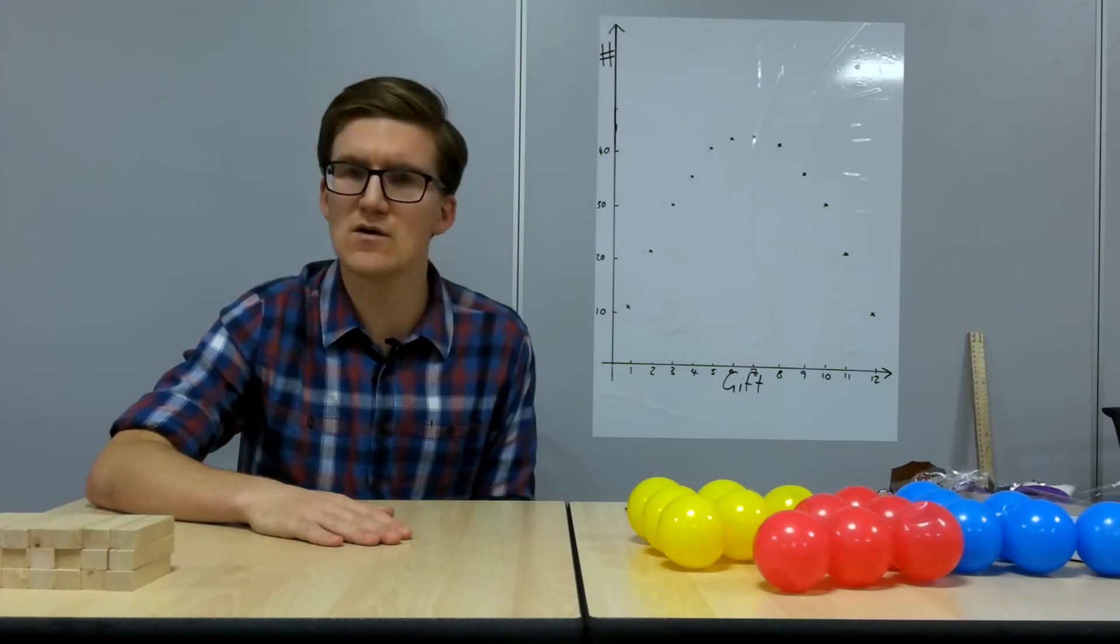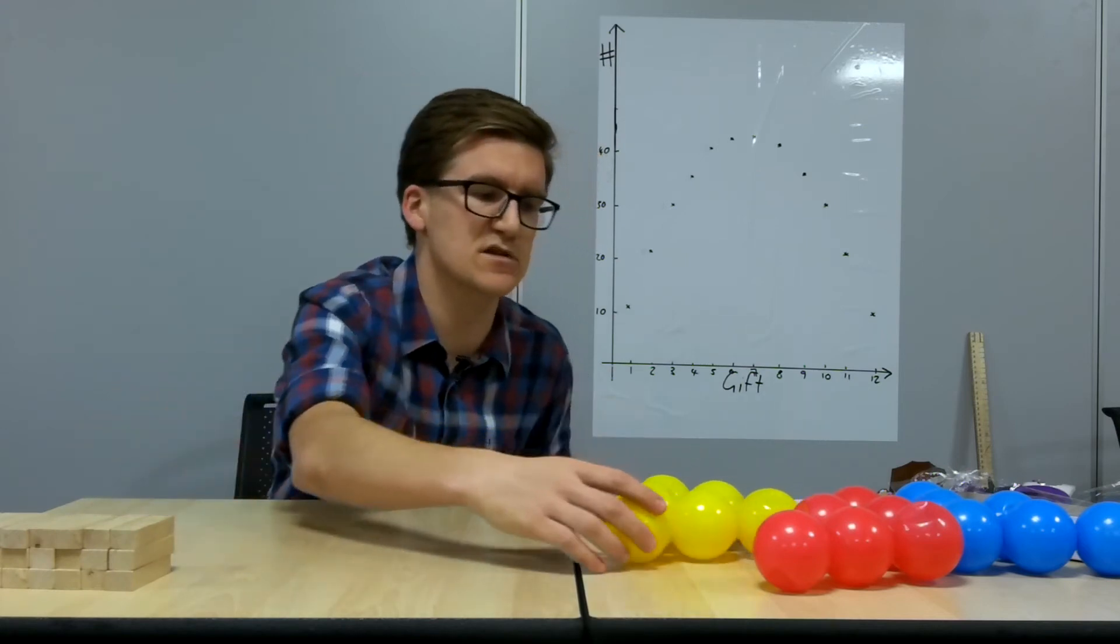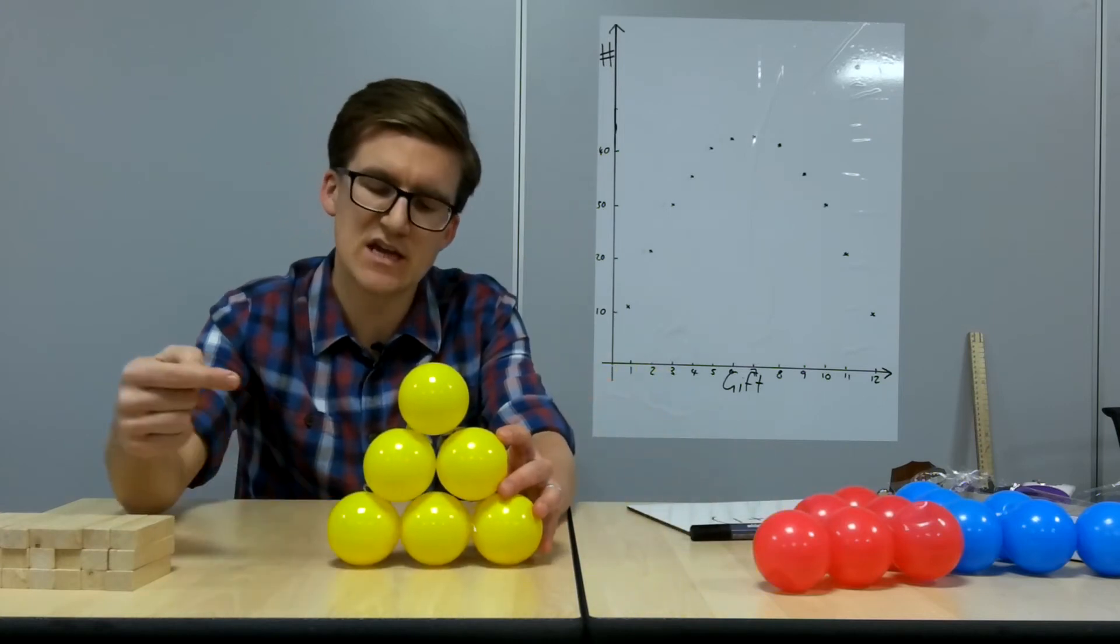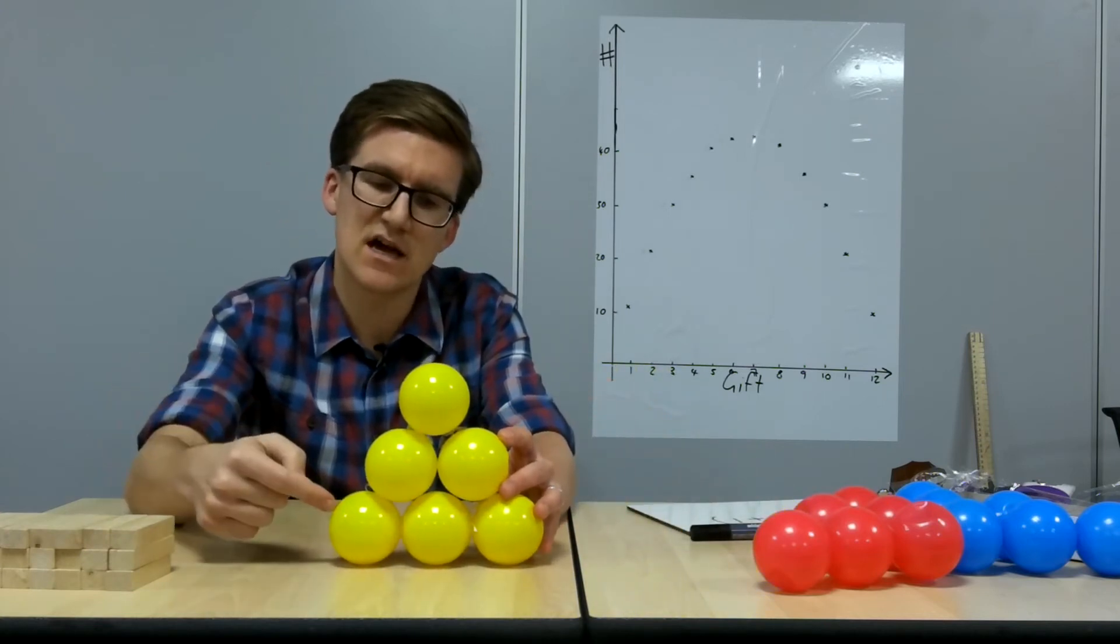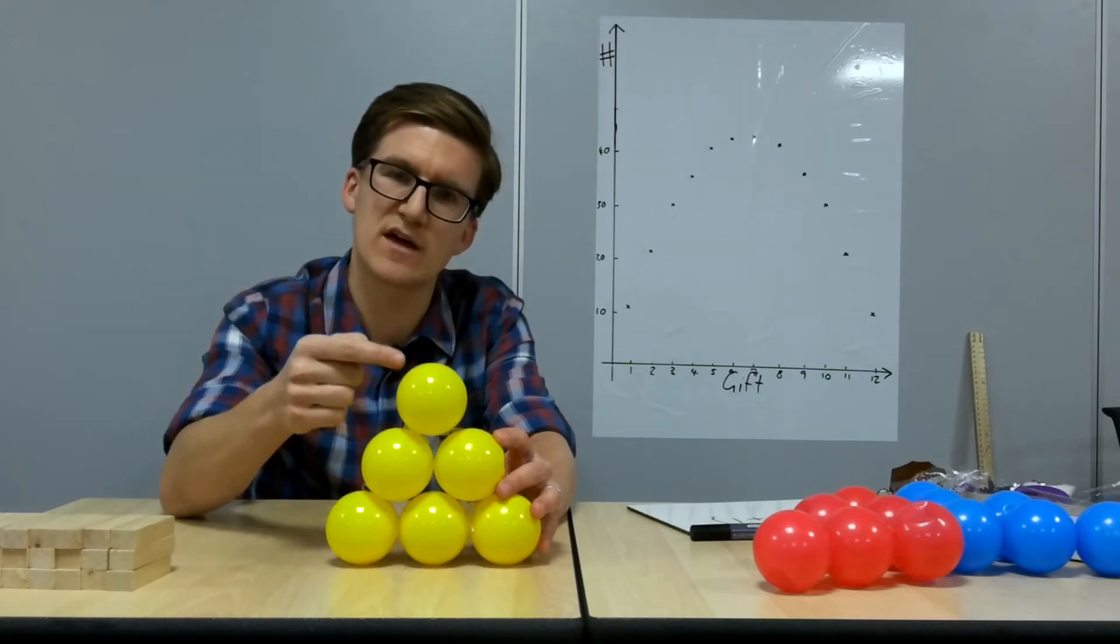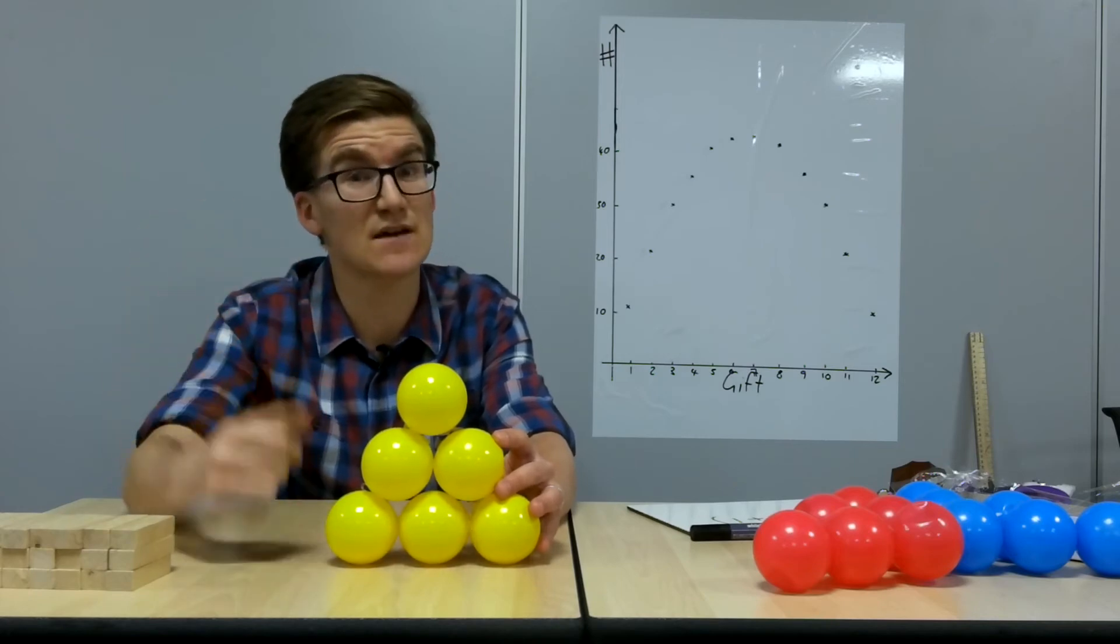Now, if we think about just any given day, let's say the third day, the third day of Christmas, what you get on the third day of Christmas is you get three gifts and then the two gifts again that you had the previous day and then you get the one gift at the end of that, the partridge in a pear tree, don't you? So this is the third day, you actually get six gifts altogether.